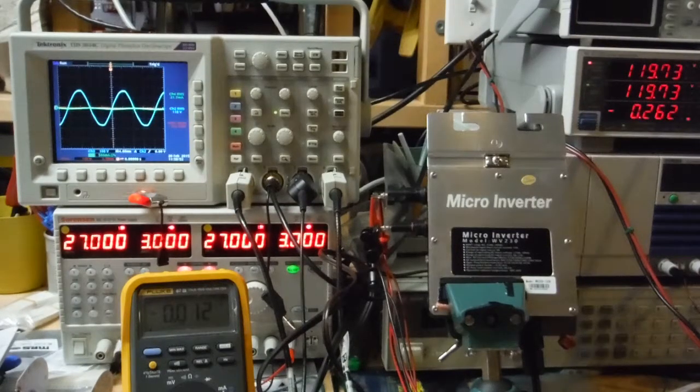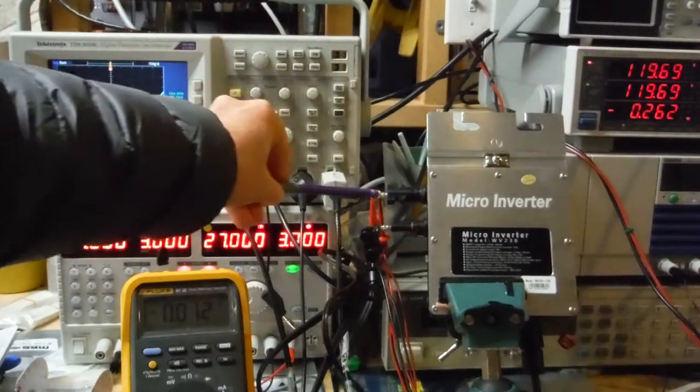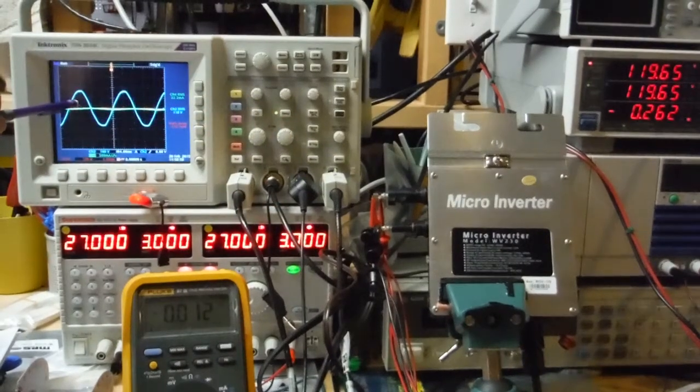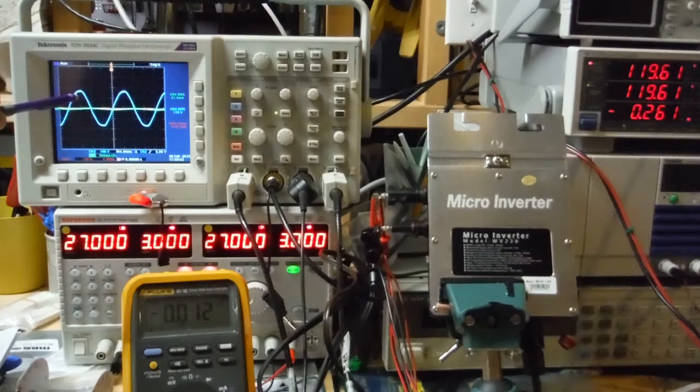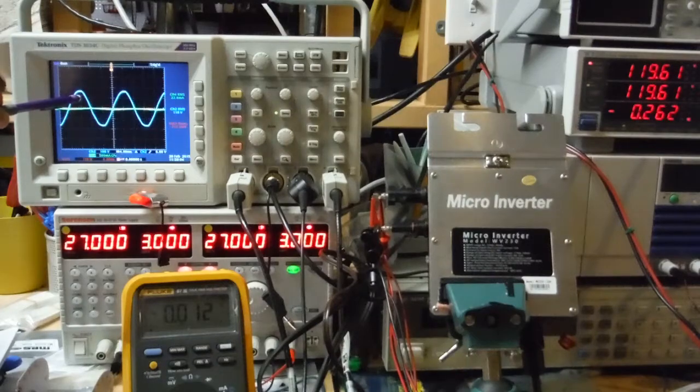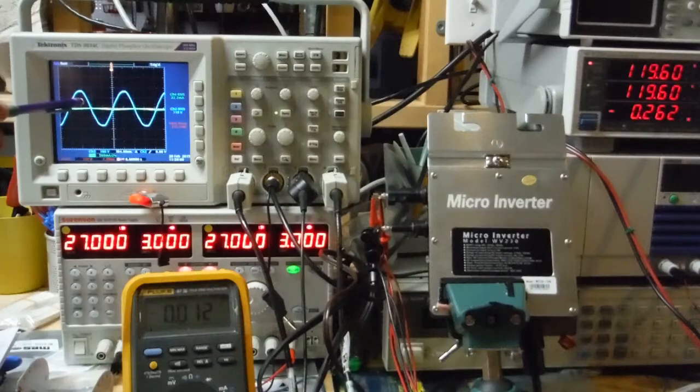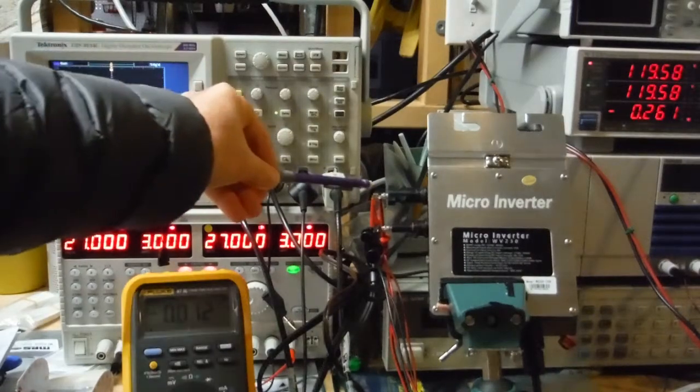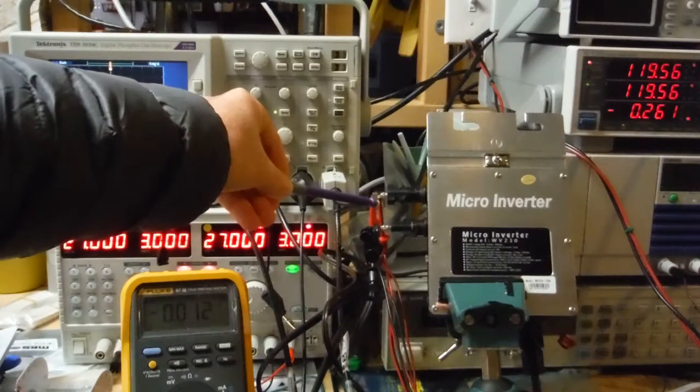So the 262, well actually let me start over. Input current and output current and output voltage are on the scope. The blue trace is the output voltage, which really isn't the output voltage at the moment because there's no input. I'm measuring input voltage as close as I can to the microinverter connectors.